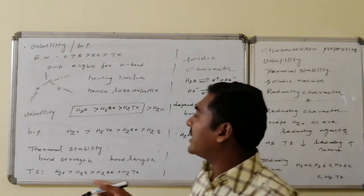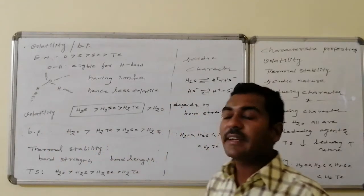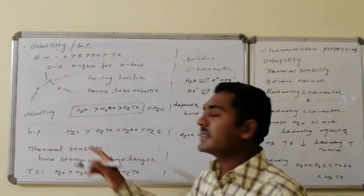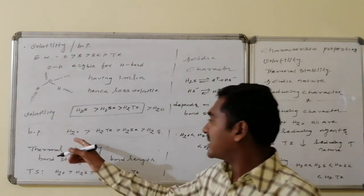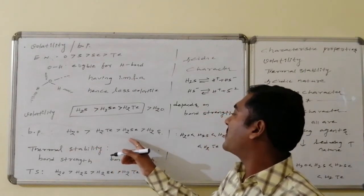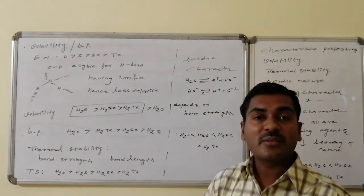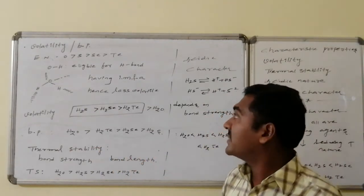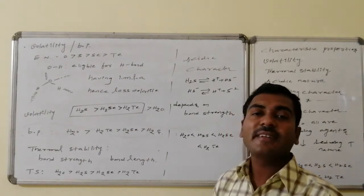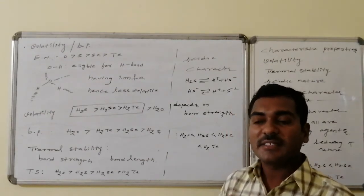Since volatility and boiling point are inversely related, water has the highest boiling point. The next hydrides in order—hydrogen telluride, hydrogen selenide, and hydrogen sulfide—have progressively lower boiling points following the general trend of decreasing molecular weight and intermolecular forces.